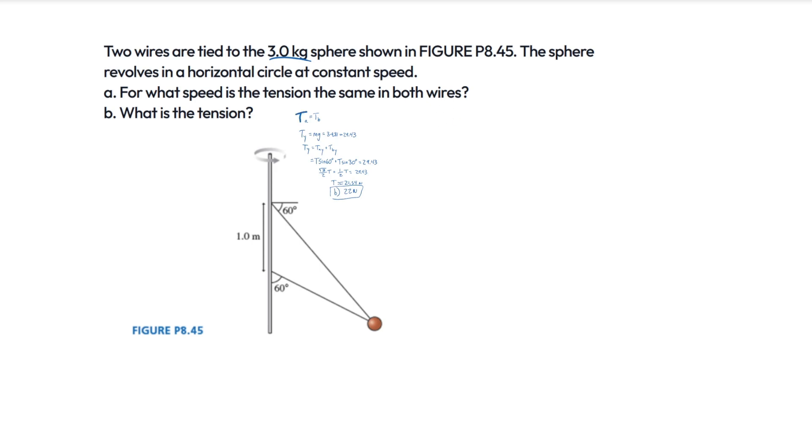All right, now let's look at A. For what speed is the tension the same in both wires? So this time, instead of looking at the vertical component, we're going to want to look at the horizontal component. Because we have the centripetal force, and the equation for that is equal to mv squared over r. And that has velocity in that. So speed is the magnitude of velocity. We can just solve for the velocity here. We already have the mass as 3 kilograms. So we have 3v squared divided by r.